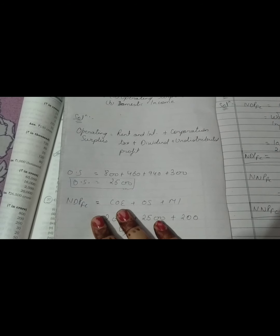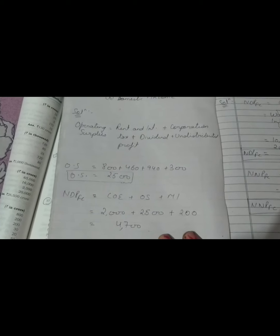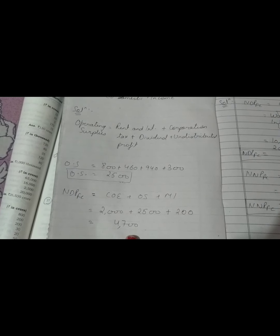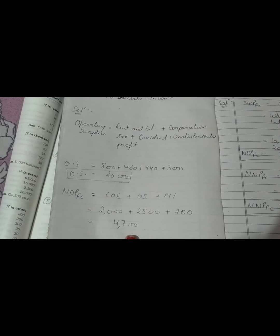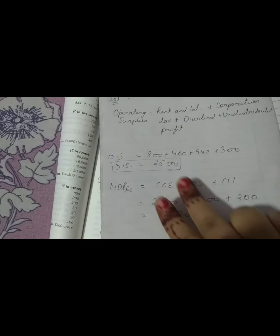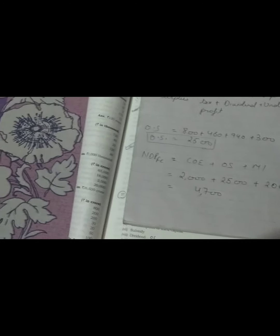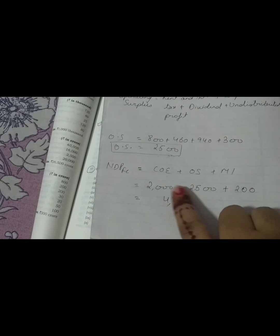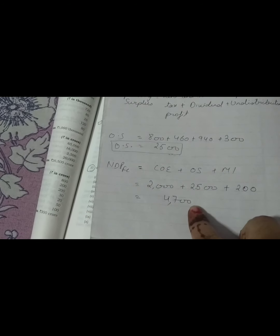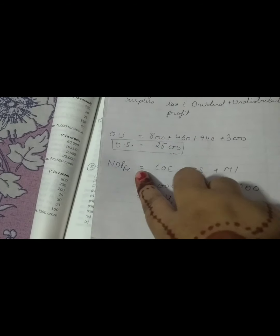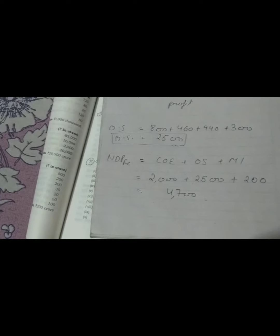Second, we calculate NDP at FC. The formula for NDP at FC is: compensation of employees plus operating surplus plus mixed income. Compensation of employees is already given as 2000, operating surplus we just calculated as 2500, and mixed income is 200 as given. Adding 2000 + 2500 + 200, domestic income equals 4700. That is how we solve this question.